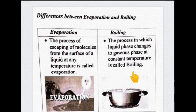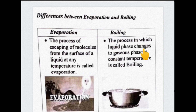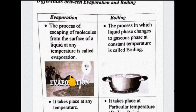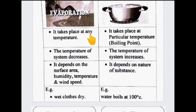In boiling, there are bubbles. Why? Because if we try the phase change, we can see the phase change occurring. When we reach the boiling point surface, bubbles will form. So, evaporation takes place at any temperature, while boiling takes place at a particular point — at 100 degrees centigrade.